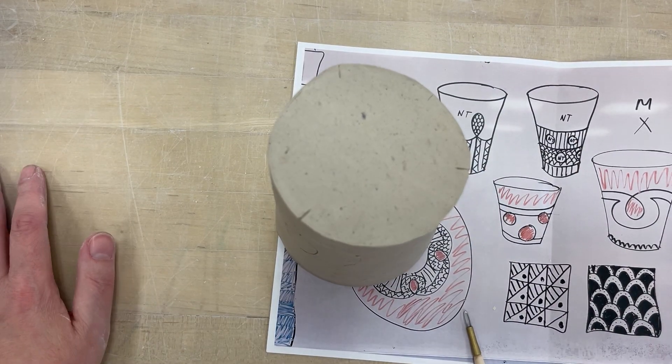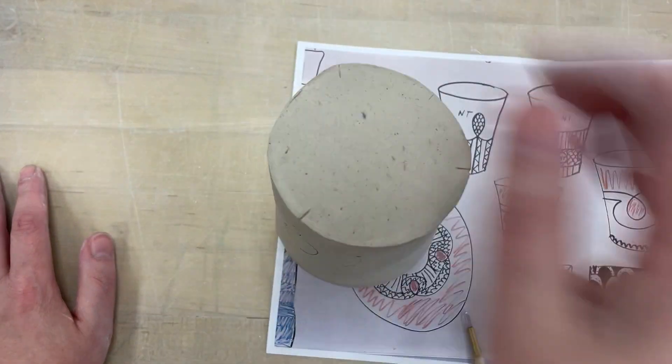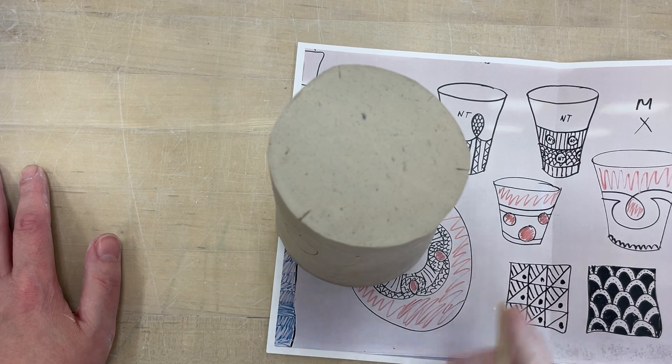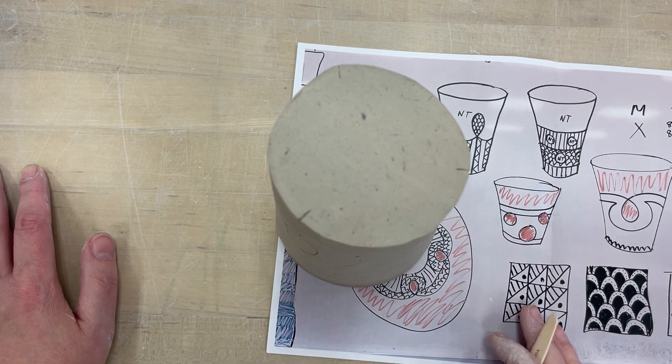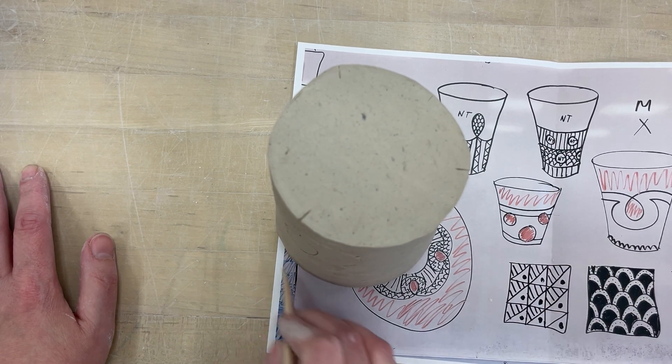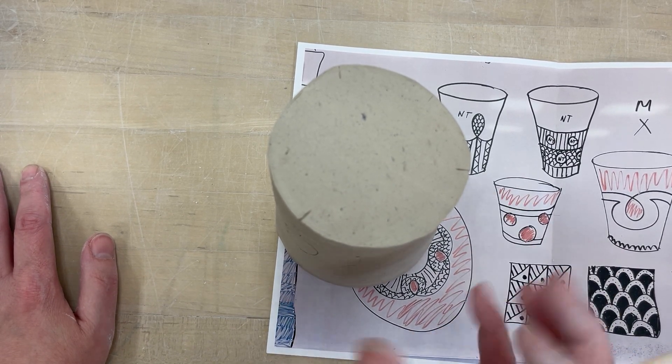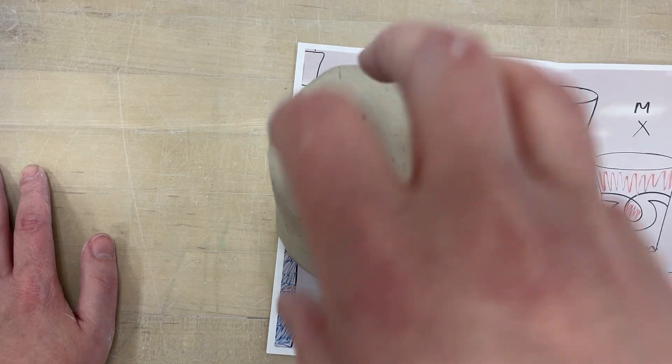One thing I have noticed students do in the past is they will set it on their lip, especially when they do their bowl. They try to do this and they will push against it with nothing on the inside. That will break your project. It's going to break your lip and it's going to dent like your tumbler.